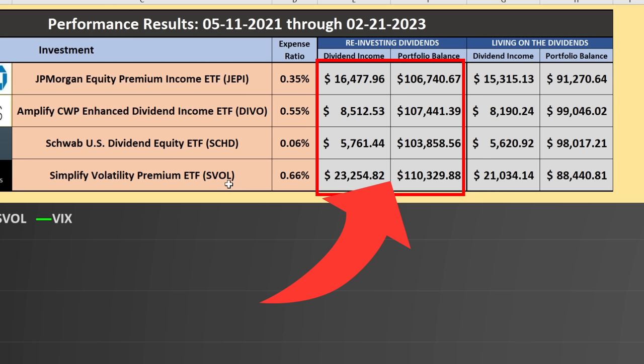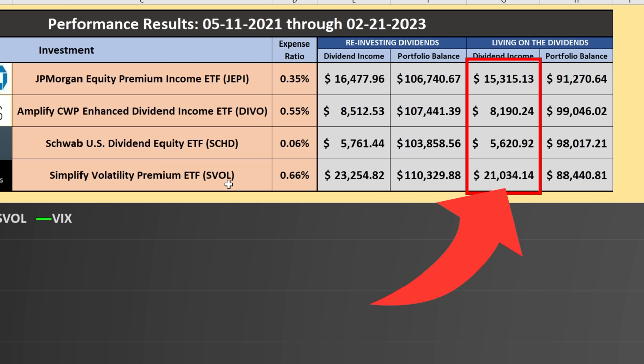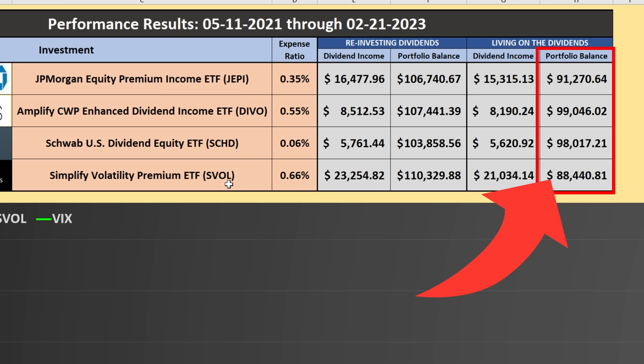Now looking at just living on the dividends — not reinvesting — SVOL still wins with respect to dividend income during the period at $21,000 compared to $15,000 for JEPI, $8,000 for DEVO, and $5,600 for SCHD. From a portfolio balance perspective, SVOL is no longer in first place, primarily because that high dividend income is not actually being reinvested for more shares, which would eventually lead to more income.